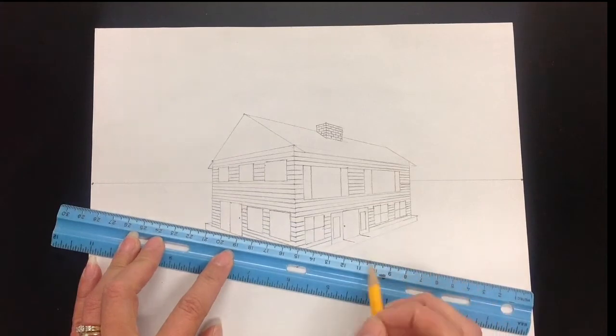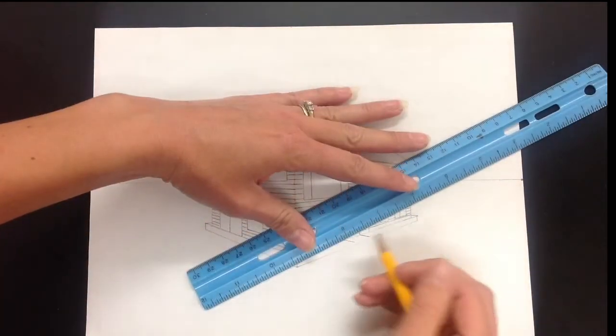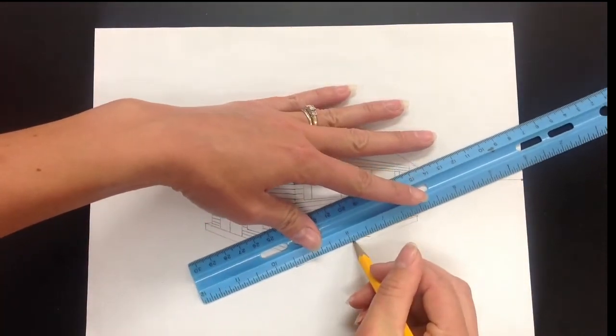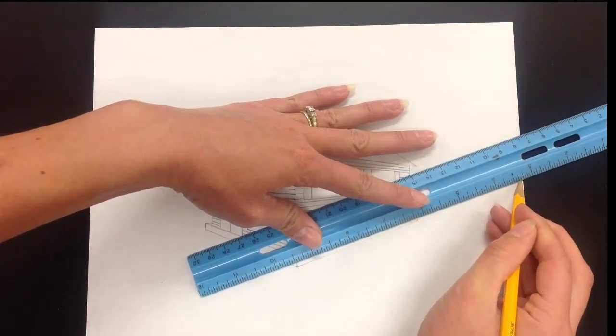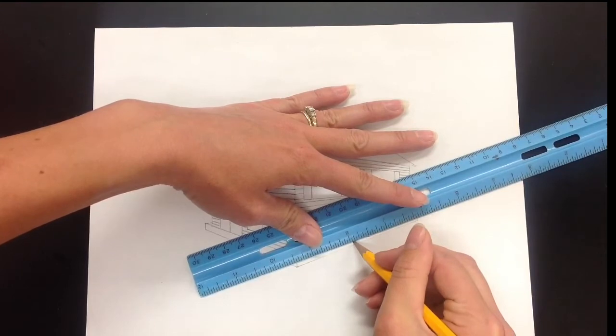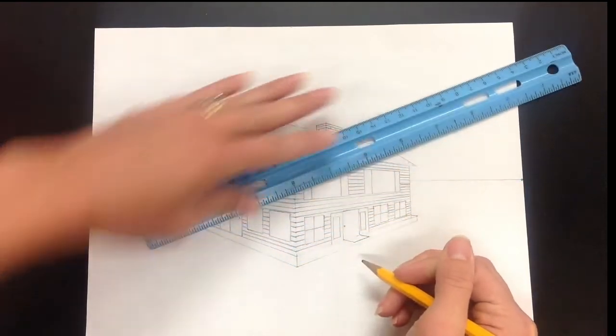Now we need to connect those two lines. The vanishing point that makes the most sense is going to be the vanishing point on the right. So let's connect those two lines together, but make sure you match up with the vanishing point on the right. You always want to be on a vanishing point with those receding parallel lines. Never just make that line up, otherwise it's going to look completely wrong.